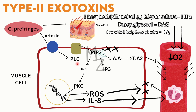PLC breaks down PIP2 — a molecule incorporated in the cell membrane — into DAG and IP3, leading to destruction of the cell membrane. DAG activates protein kinase C (PKC), which activates transcription factors that activate genes producing proteins like interleukin-8. This interleukin activates neutrophils in blood vessels, which come to the area and further destroy the cell membrane. There is also an increase in reactive oxygen species (ROS) that damage cell membrane proteins and DNA.